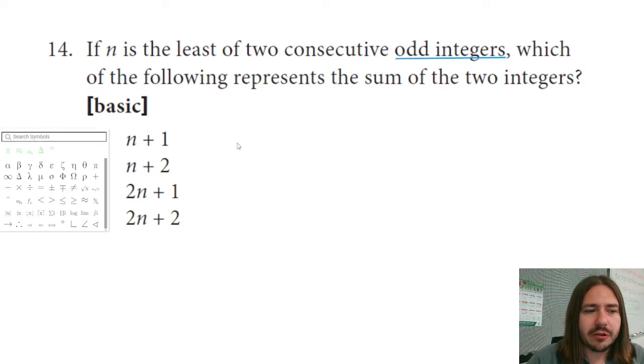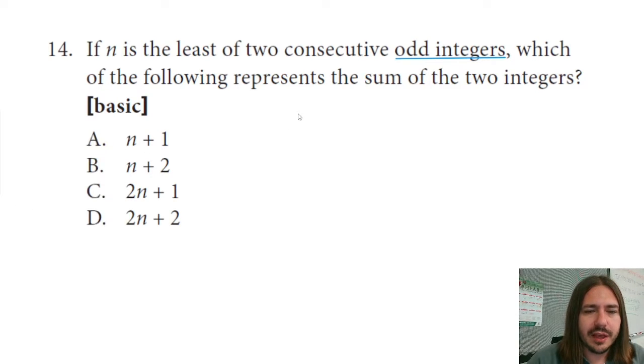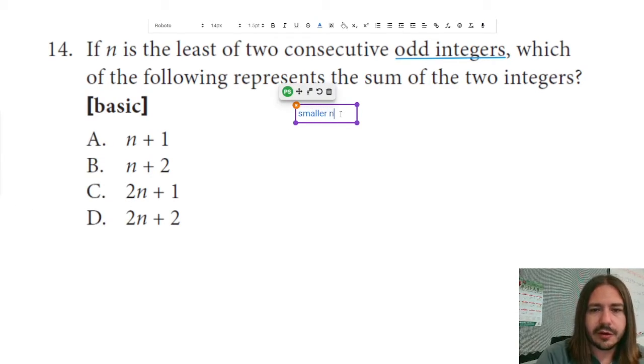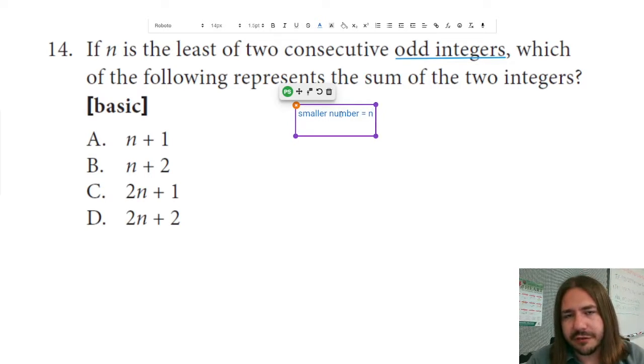So if the smaller number is n, then the next consecutive integer... and consecutive means if you have a list of things, if two items in that list are consecutive, that means they follow one after the next. So if I'm saying the next consecutive odd integer, if the smallest one is, say, 7, the next one would be 9.